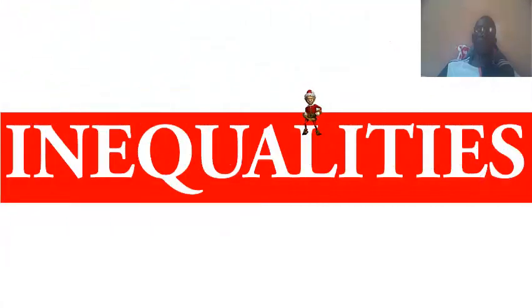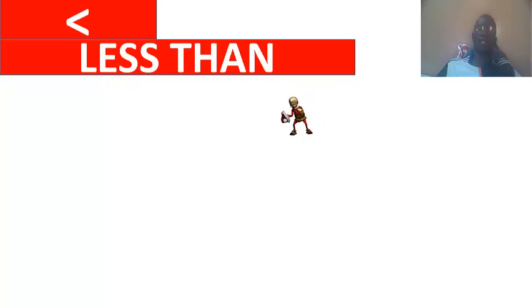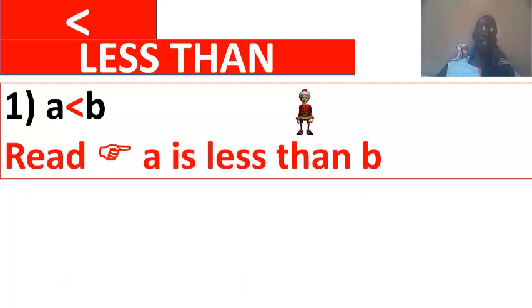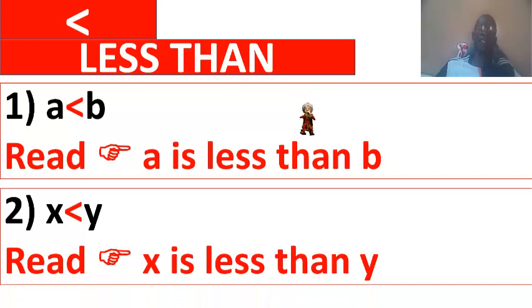So today we are going to talk about first inequalities. What are inequalities? First of all, this sign is read in English less than. Example, A is less than B, A is inferior to B. In English, A is less than B. X is inferior to Y, X is less than Y.